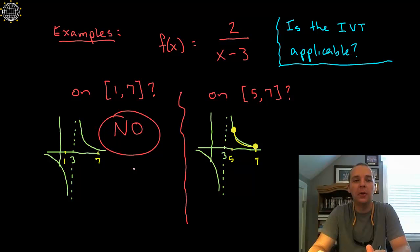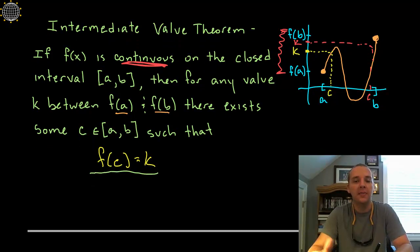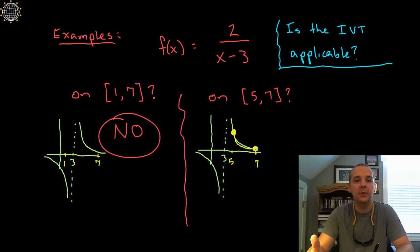Now why is it not applicable on this interval? Well, one of the requirements was that your function had to be continuous on the interval from 1 to 7, and like we said earlier, there was an asymptote at 3. 3 gives you division by 0, and there's an asymptote here, so it's not continuous on that interval.